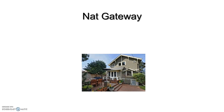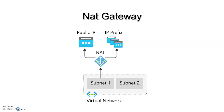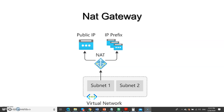The next concept is NAT Gateway. Assume you have a private space and still need a backdoor for private access only — not publicly available. For example, you have 20 VMs and need to apply OS-level updates or software updates, which require outbound internet access but not inbound. NAT Gateway handles this — it allows outbound traffic for resources in your private subnet without making them publicly accessible.